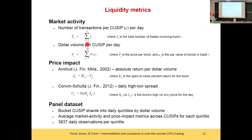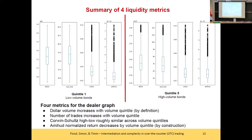Now we try to connect this to liquidity metrics. We focus on two standard metrics from the finance literature: Amihud's price impact, which looks at the absolute return open-to-close over the course of the day divided by dollar volume, and the Corwin-Schultz measure, which looks at the high-low range over the course of the day as a measure of price volatility. We put those in the same five buckets for the statistical analysis.